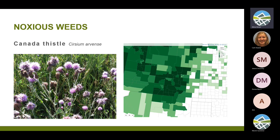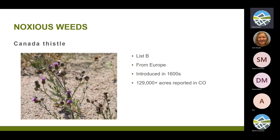The next weed is Canada thistle. As you can tell by the map from EDDMapS — a program at the University of Georgia that catalogs invasive species across North America — you can see how many sites are known to occur in your state or county. We have quite a bit of it. It's in the sunflower family and it's List B, so control is required but it's not required to be eradicated because we have so much of it. It's from Europe and has been known in North America since the 1600s.